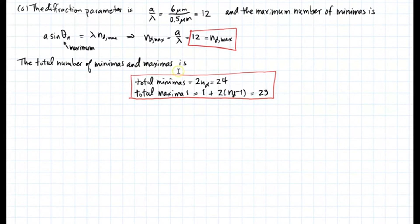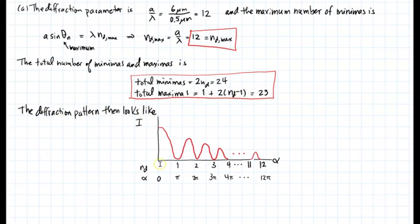Total number of minimas and maximas: the total minimas is 2 times ND, which gives you 24. The total maximas is 1 plus 2 times ND minus 1, which gives you 23. The diffraction pattern looks like this. I'm going to have 12 minimas. ND is going to be all the way up to 12. And if I look at the phase alpha, it's 0 pi, 2 pi, 3 pi, 4 pi, all the way to 12 pi. And then the pattern ends there.